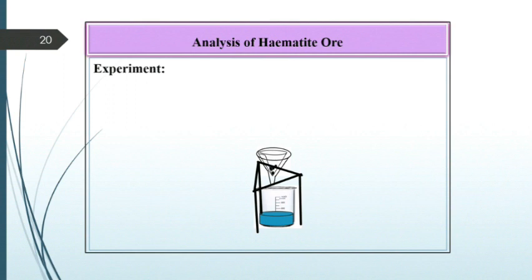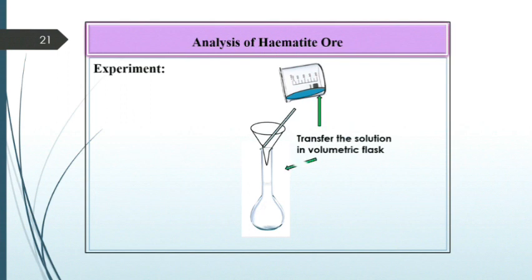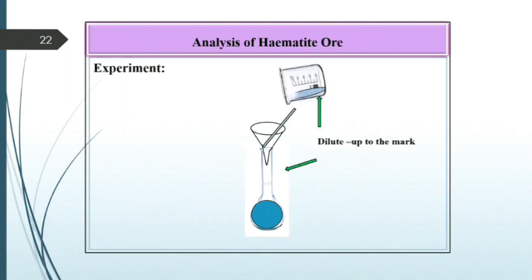Now collect the filtrate and washings in the same beaker. Then transfer this solution in a 100 ml volumetric flask and dilute it up to the mark by using distilled water.